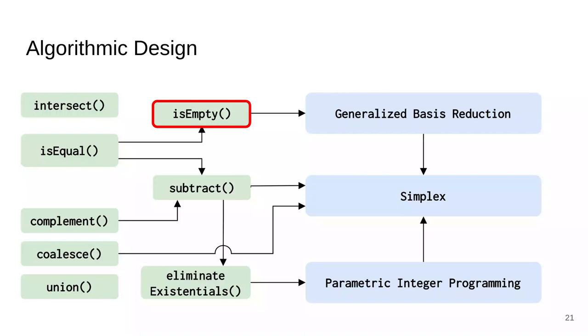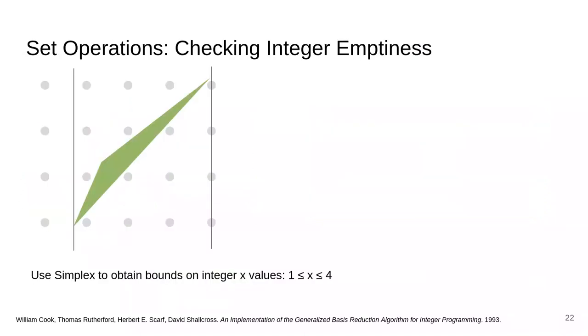Let's look at the emptiness check operation. Here we want to find out if there exists an integer point within the given set. It is easy to find out whether there exist rational points using linear programming, and in fact we can obtain a bound of values that each variable can take. So in this case, we know that x can take rational values between 0.8 and 4. Since we are only concerned about integer values, we can simply try all the integer values of x in this range, namely 1, 2, 3, and 4, and find that there are no integer values of y corresponding to any of these x values.